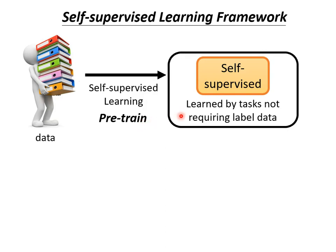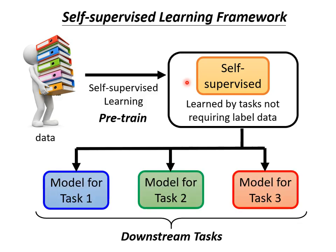After we train a model with these labeled-data-free tasks, this model is still not that useful. BERT can only do fill-in-the-blank questions, while GPT can only complete a sentence. For other downstream tasks, we have to fine-tune the self-supervised learning model so it can then be useful in downstream tasks.